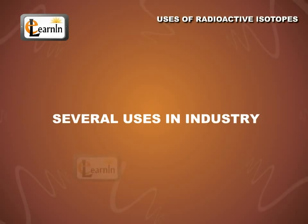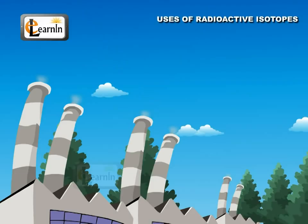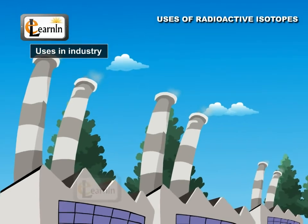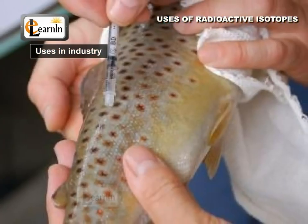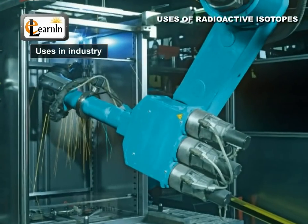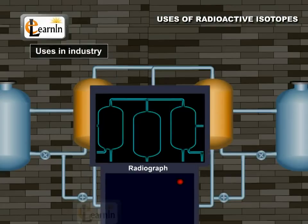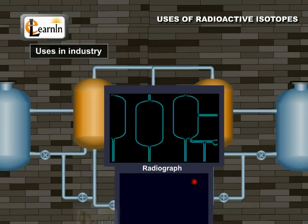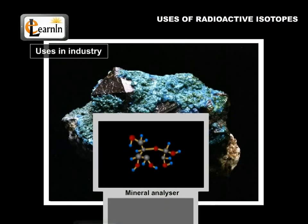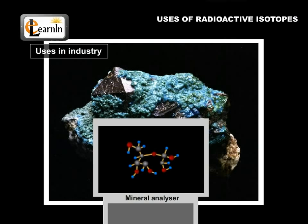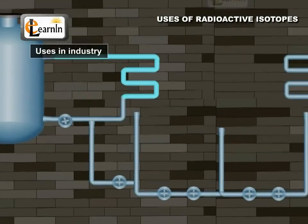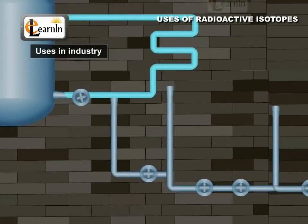Several uses in industry: modern industry uses radioisotopes in a variety of ways to improve productivity and, in some cases, to gain information that cannot be obtained in any other way. Sealed radioactive sources are used in industrial radiography, gauging applications, and mineral analysis. Short-lived radioactive material is used in flow tracing and mixing measurements.